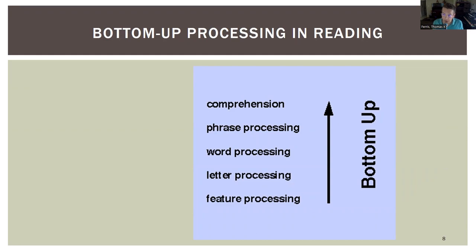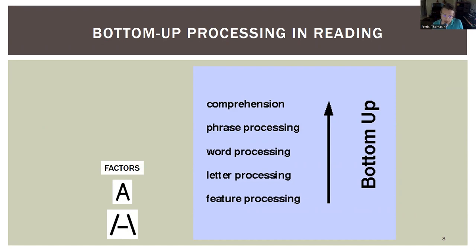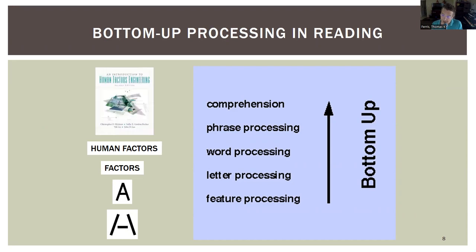Applying this to reading: bottom-up processing starts with seeing edges — two diagonal edges and a horizontal line — and building them together to recognize an 'A.' That letter is seen in the context of a word, which is seen in the context of a phrase, and ultimately you understand a whole textbook. It starts with recognizing that contours and line elements assembled in a certain arrangement have meaning, and that meaning is embedded in broader meaning, moving from raw sensory input toward experience.